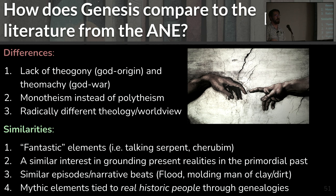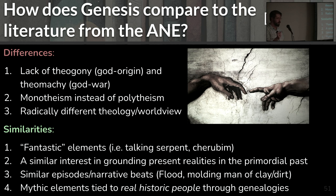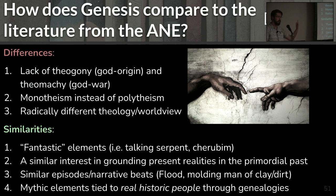Some key differences: there's a lack of theogony in Genesis — no account of where the gods come from. There's another relevant text called the Enuma Elish, a Babylonian text that talks about where the gods come from; creation comes about through a war of the gods. Famously, Marduk fights a snake god named Tiamat, rends Tiamat in half, throws her upper body into the skies to make the firmament and her lower body to make the earth. Obviously in Genesis, God simply says 'let there be a firmament, let there be earth.' Very different theology.